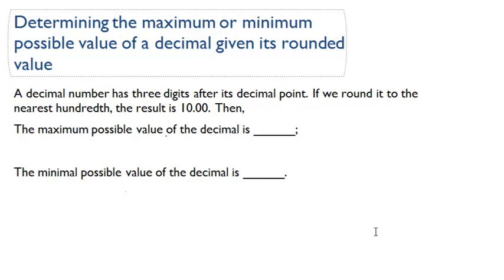Determining the maximum or minimum possible value of a decimal given its rounded value. A decimal number has three digits after its decimal point. If we round it to the nearest hundredth, the result is 10.00.